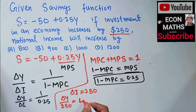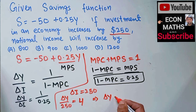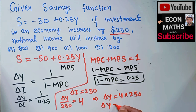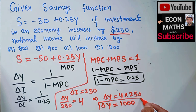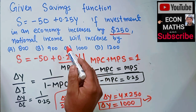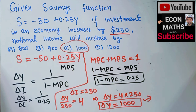1 divided by 0.25 is the same as 1 divided by one-quarter, which equals 4. Therefore, the change in income equals 4 times 250, which gives us $1,000. So with an increase in investment of $250, the national income increases by $1,000 — meaning the correct option is C.